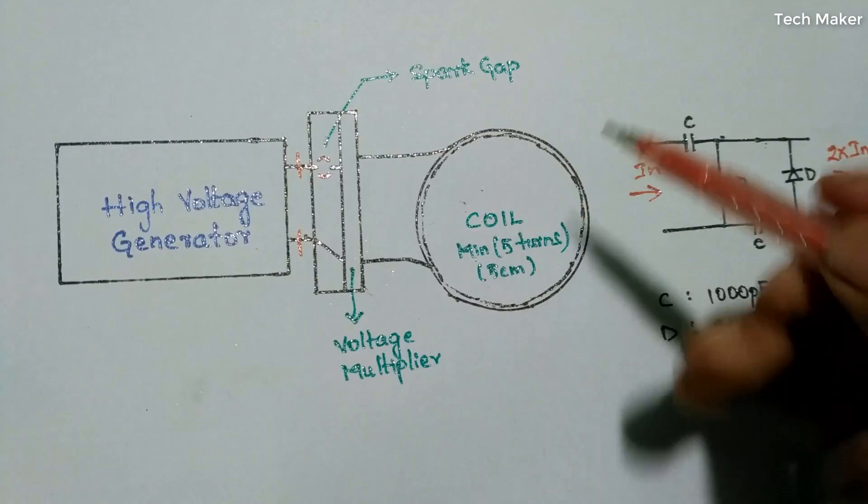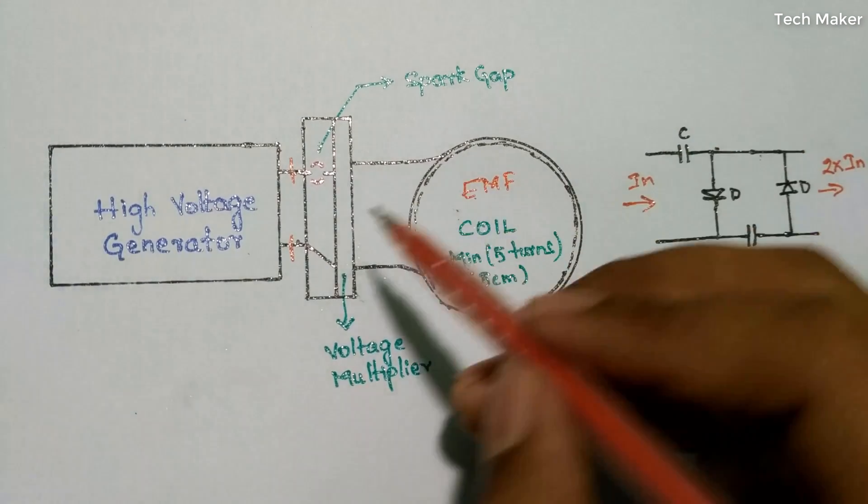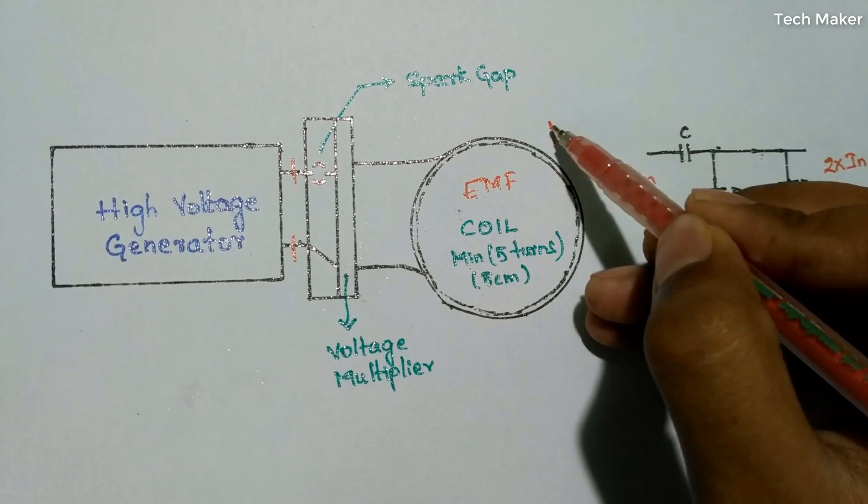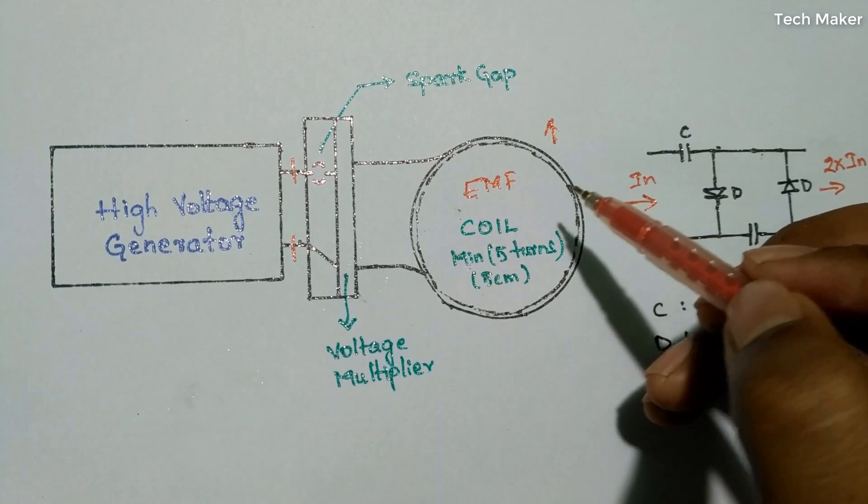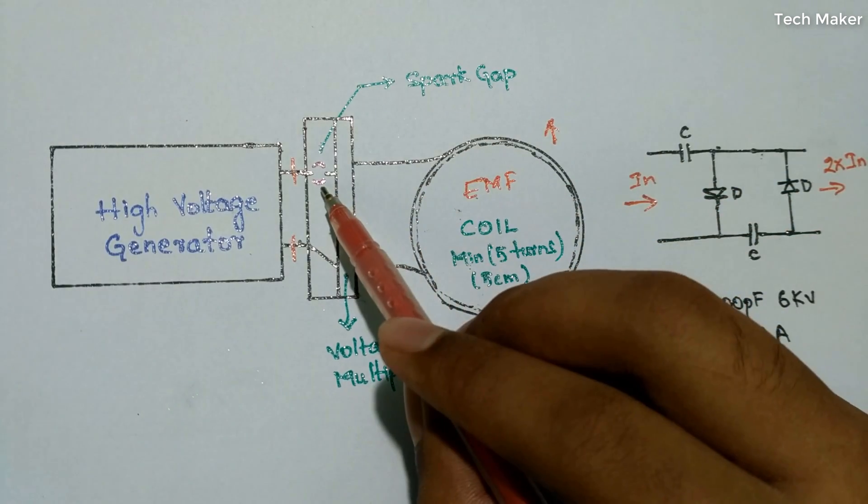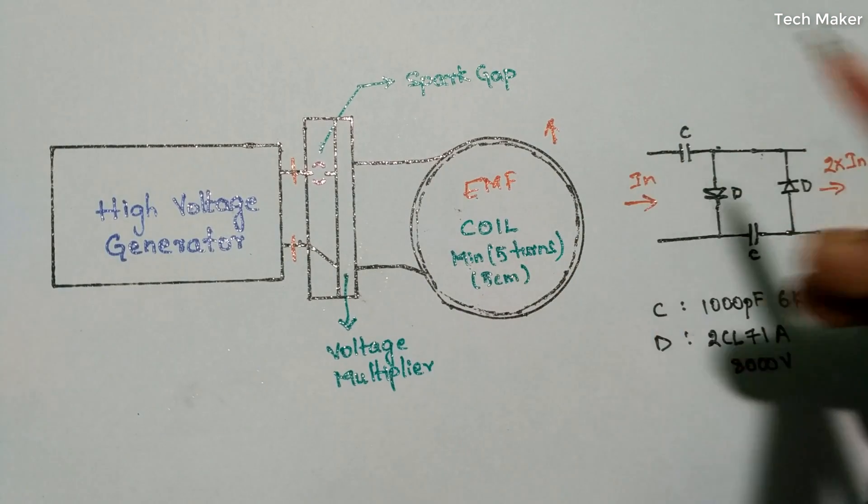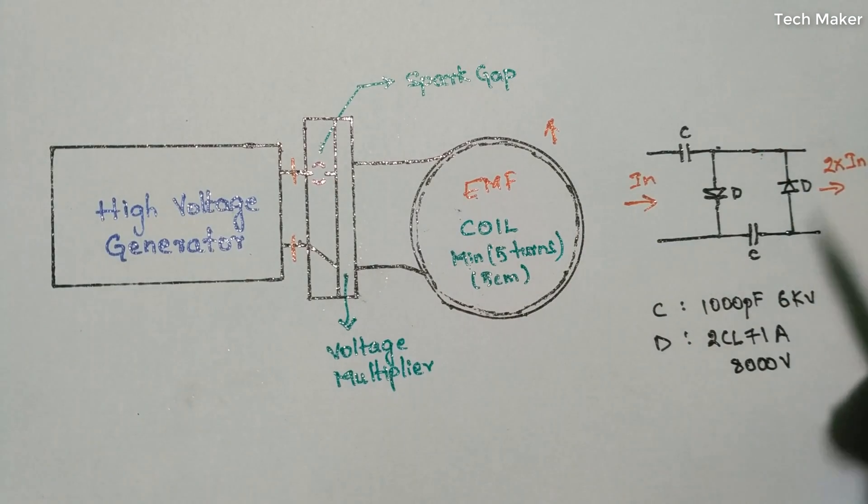When the spark is getting from the high voltage generator to the coil, EMF is produced. When the spark jumps, the EMF rises to peak voltage. When this spark gets off, the EMF suddenly falls down.